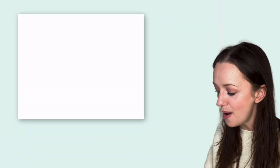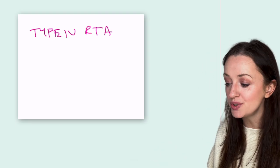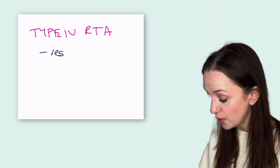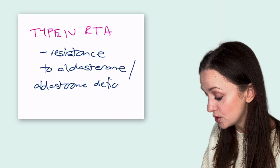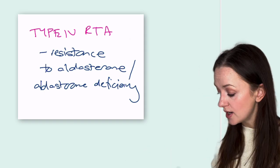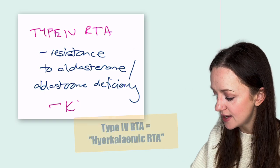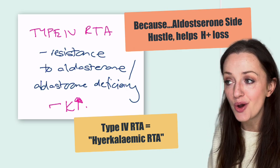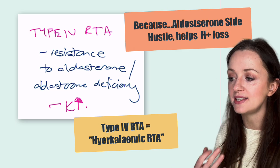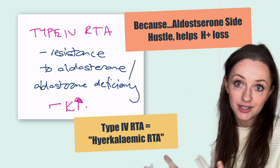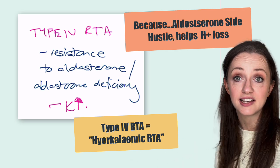Another way this might turn up is in type 4 renal tubular acidosis. In type 4 RTA, it's basically just a resistance to aldosterone — or an aldosterone deficiency — in the nephron. With aldosterone having less of an effect, patients are more at risk of high potassium. I mentioned that aldosterone had another job: apart from salt and water reabsorption, it also helps us lose hydrogen ions in the urine. So it has a function in acid-base balance, which is why aldosterone deficiency or resistance can cause a renal tubular acidosis — the kidney has trouble getting rid of acid.